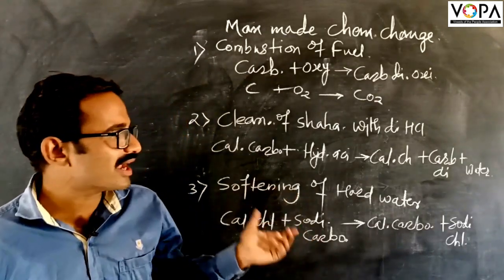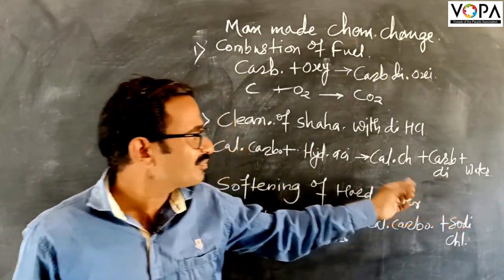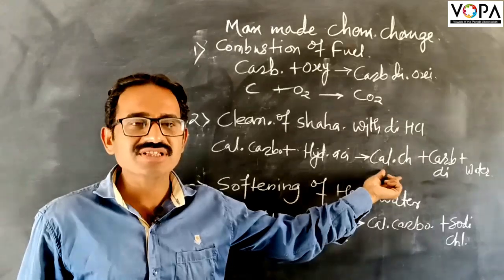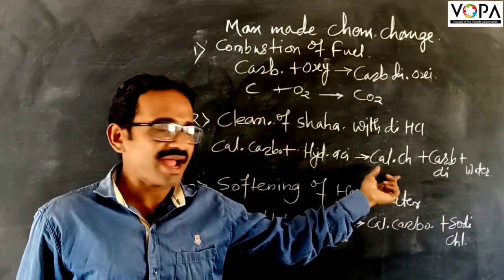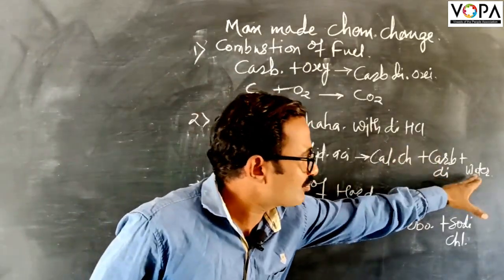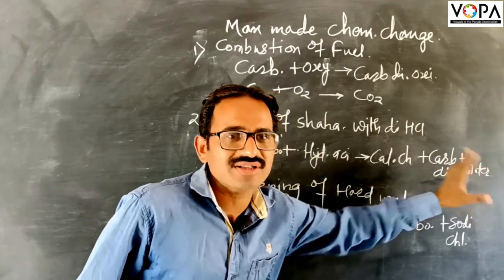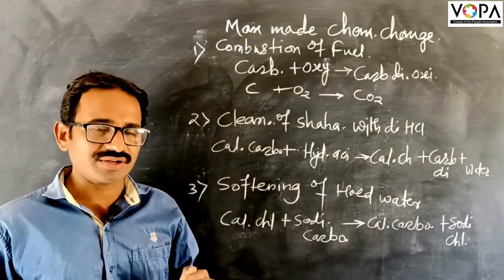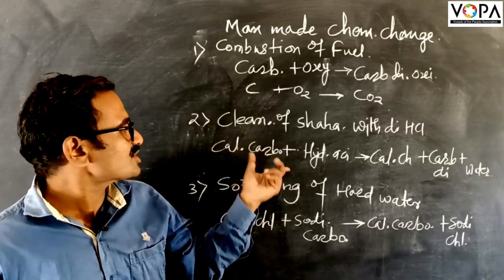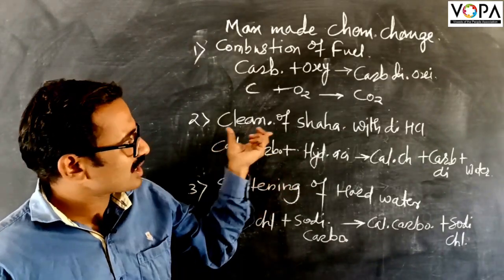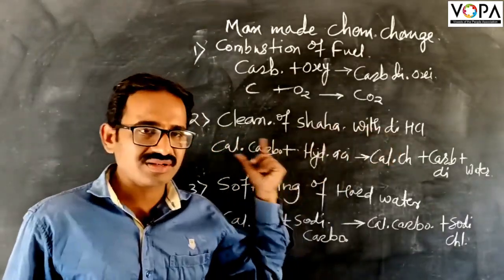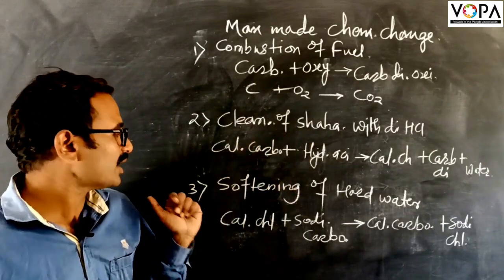Then we get bubbles of carbon dioxide and calcium chloride which is dissolvable in water. The third substance is water, which is also dissolved in water. This is the word equation for the cleaning of Shahbadi's style with hydrochloric acid.